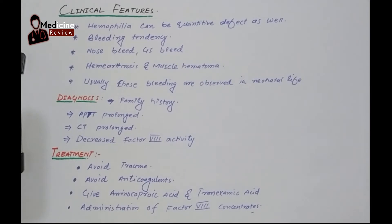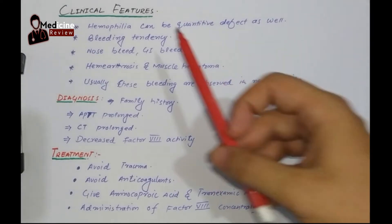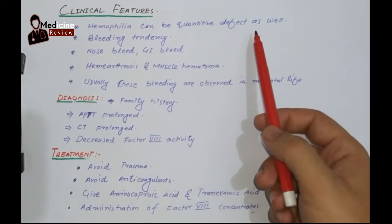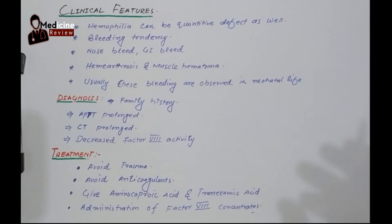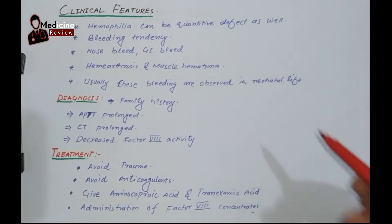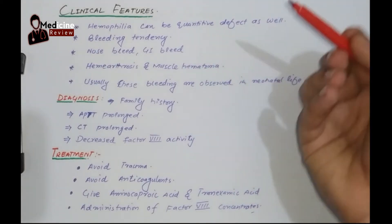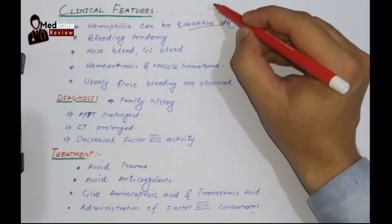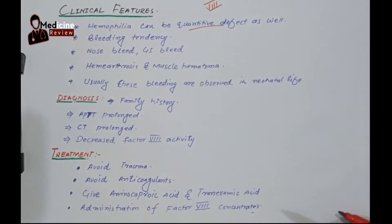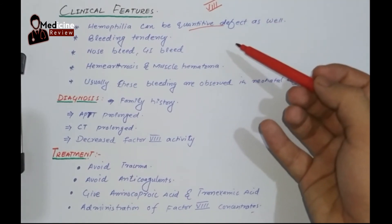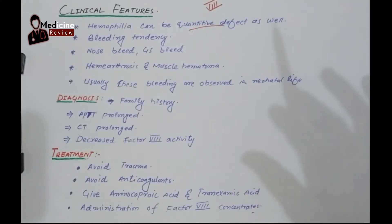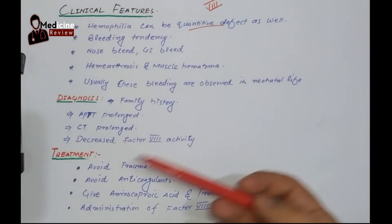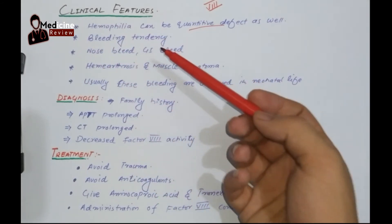If we look at the clinical features of hemophilia, the hemophilia can present as a quantitative defect. Some patients will present with milder symptoms of hemophilia A, and some will present with moderate or severe symptoms. It depends on how much factor 8 is missing. On the basis of how deficient factor 8 is, the symptoms will appear accordingly. There will be increased bleeding tendency.